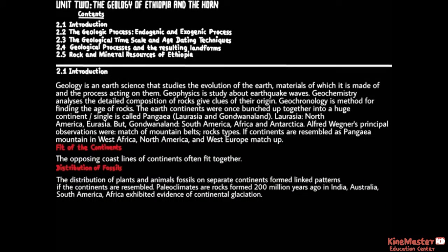Unit 2: The Geology of Ethiopia and the Horn. Contents: 2.1 Introduction. 2.2 The Geologic Process — Endogenic and Exogenic Processes. 2.3 The Geological Timescale and Dating Techniques. 2.4 Geological Processes and the Resulting Landforms. 2.5 Rock and Mineral Resources of Ethiopia.